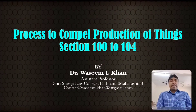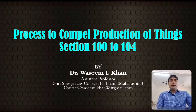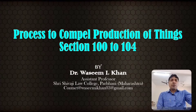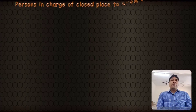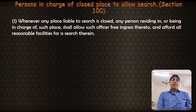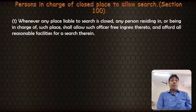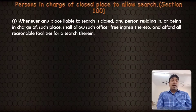Process to compel production of things — Section 100 to 104. This is the last part. Section 100 deals with 'person in charge of closed place to allow search.' Whenever any place liable to search is closed, any person residing in or being in charge of such place shall allow such officer free ingress thereto and afford all reasonable facilities to search therein.